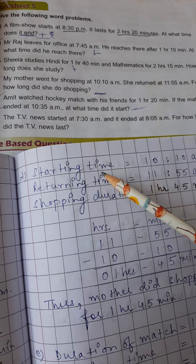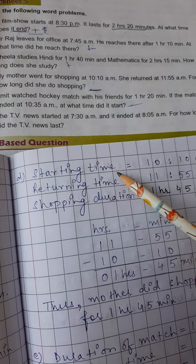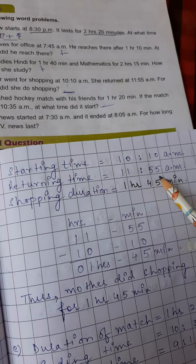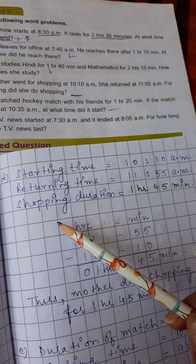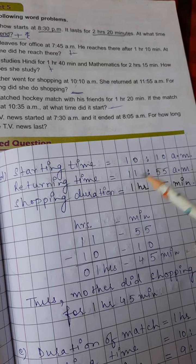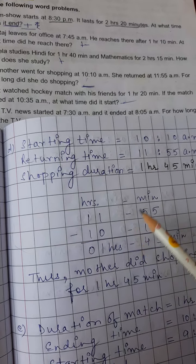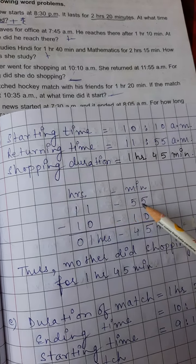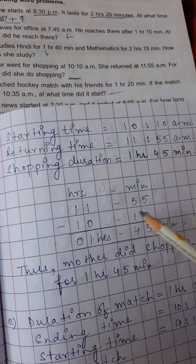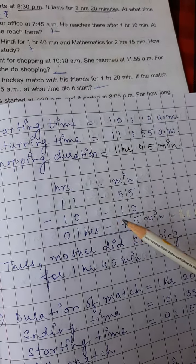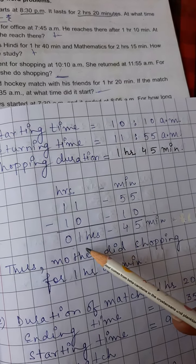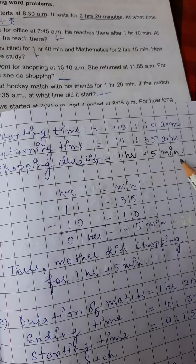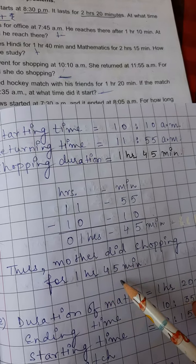So let us see how we are going to do this question. Starting time is 10.10am, returning time, when she returned, that is 11.55am. Now what is the duration? Because here we have to find out the duration. So shopping duration, this is equal to, how we are going to calculate it? We have to subtract in this case. So always, whenever you have to subtract, always write the returning time, the last time which is given, you have to write it at the top. So 11 hour, 55 minutes, you will write like this and then 10 hours and 10 minutes over here. Now subtract it, 5 minus 1 is 4, 1 minus 0 is 1, 1 minus 1 is 0 and the time is 1 hour and 45 minutes. That means, this duration is 1 hour and 45 minutes. Thus, mother did shopping for 1 hour and 45 minutes.